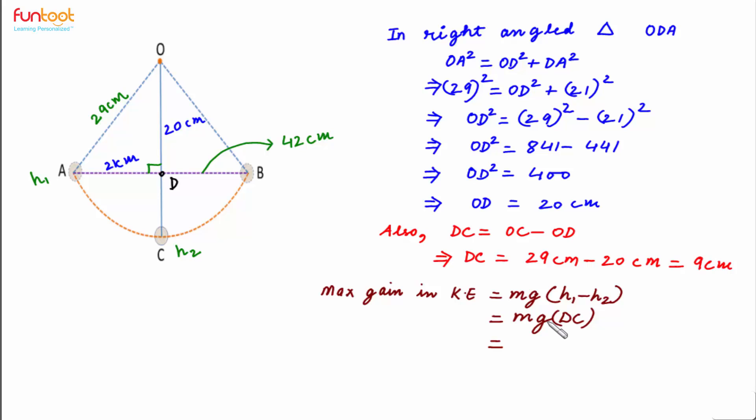As discussed, maximum gain in kinetic energy will be Mg into DC. Now M is given to be 50 grams in the question, so this will be 50 multiplied by 10 raised to power minus 3, converting this into kilograms, the SI units.